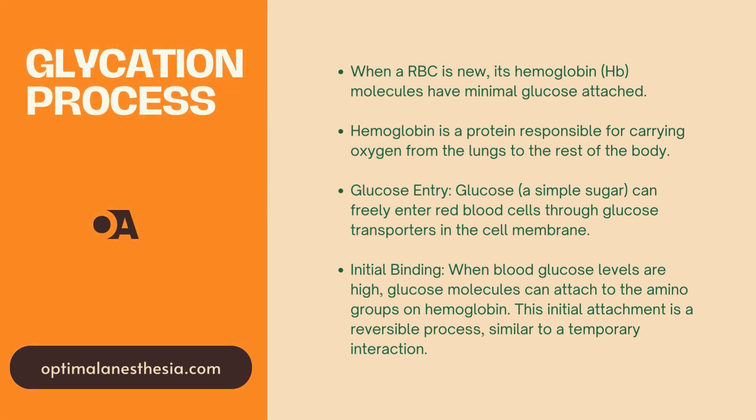Let's break it down step by step. Step 1: Glucose Entry. Glucose can freely enter red blood cells through special gateways called glucose transporters — think of these as toll booths that let glucose into the bloodstream. Step 2: Initial Binding. Once inside, glucose molecules attach to the amino groups on hemoglobin. This initial binding is like putting a sticky note on the hemoglobin — it's there, but it can still be removed.